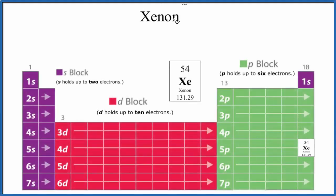In this video, we'll write the electron configuration for xenon, that's Xe. On the periodic table, when we look up xenon here, it has an atomic number of 54. And since there's no negative or positive sign, it's a neutral atom.